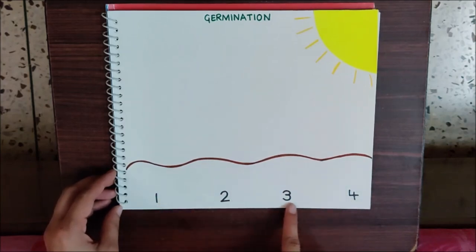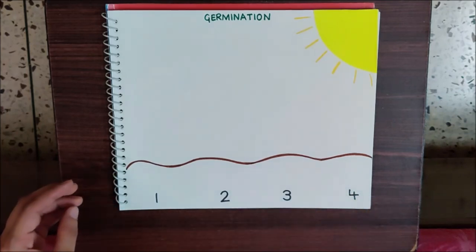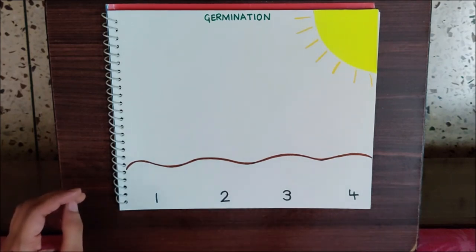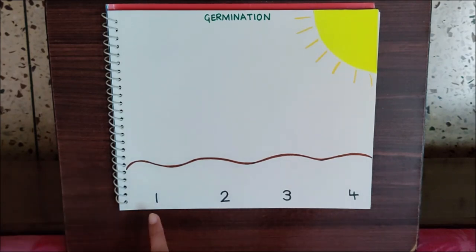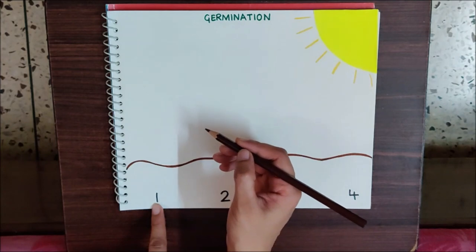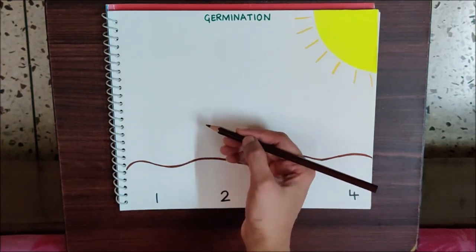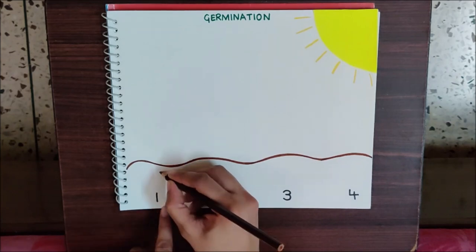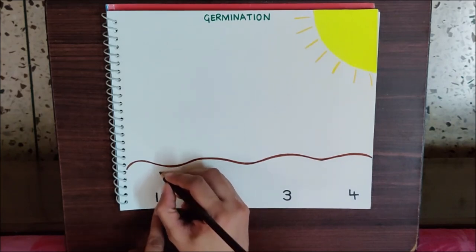So let us draw. Children, to grow a plant, what is the first step? To sow a seed in the soil. So with my brown color pencil, I am making a seed here. The first stage is to sow a seed.